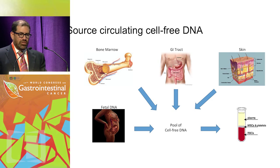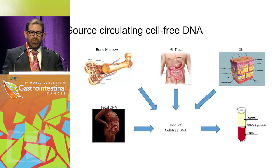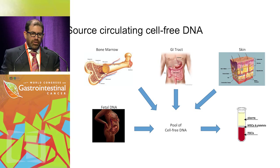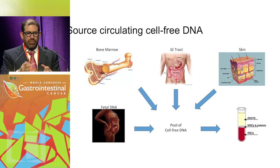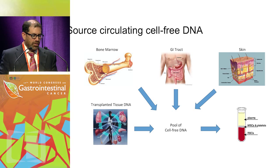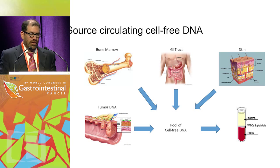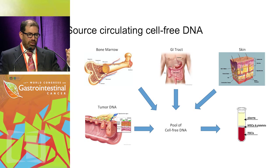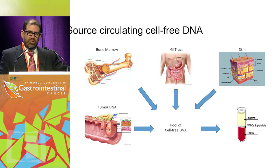DNA comes from all cells in the body undergoing cellular turnover — primarily from the bone marrow, GI tract, and skin, but also from the fetus in pregnant females, or from transplanted tissue. Cancer, much like a transplanted organ, releases DNA into the circulation because a tumor is always dividing and proliferating.